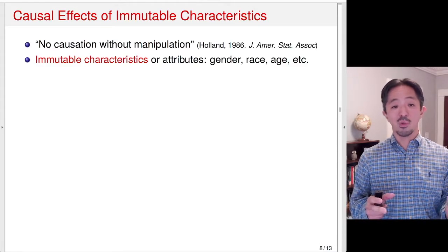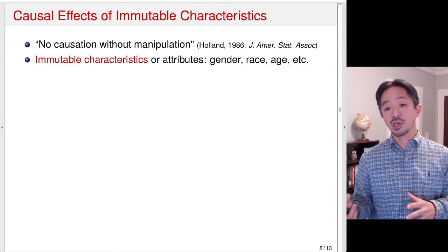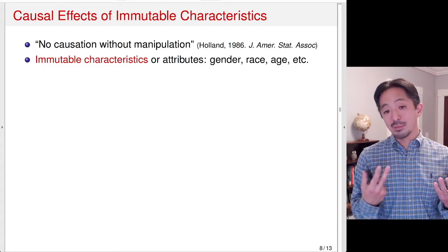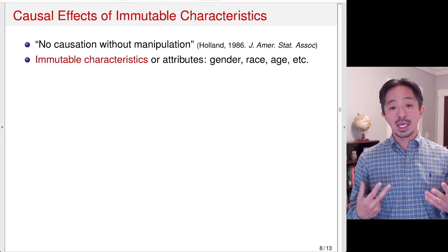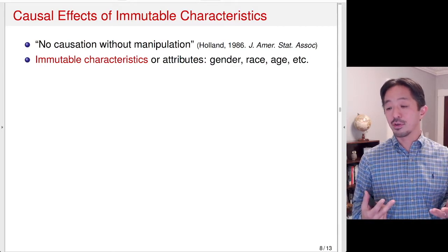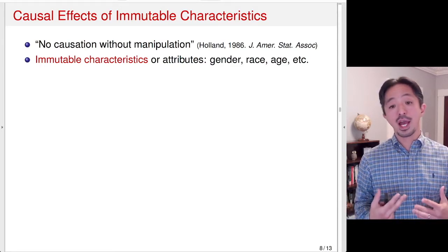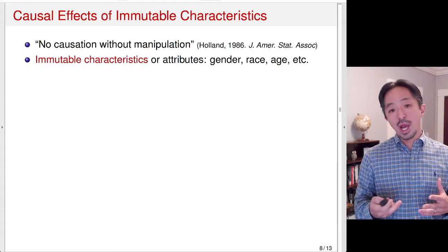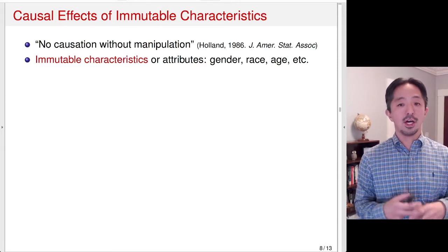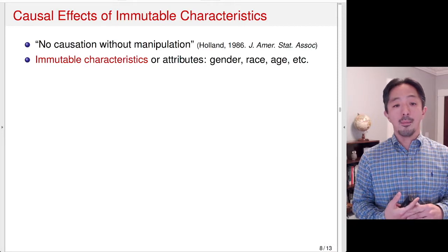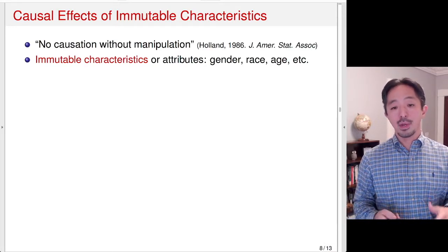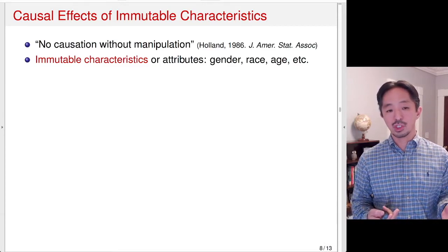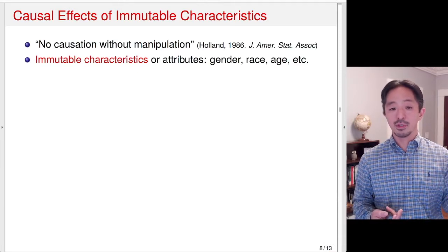It's hard to imagine what it means to be y(1) or y(0). Take gender, for example. What would my outcome — say, the outcome is a job — have been if I were female? That might be a very difficult question to even define, because I'm born as a male — it's part of my identity. There are philosophical debates about this point of view, but from a practical point of view, there are many different research design strategies to address this difficult question of what we mean by the causal effects of immutable characteristics.